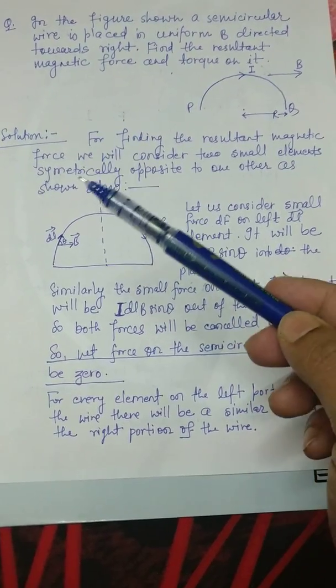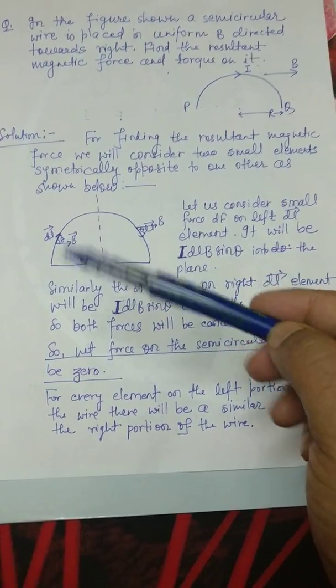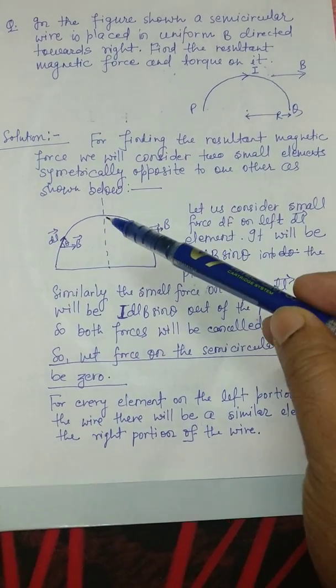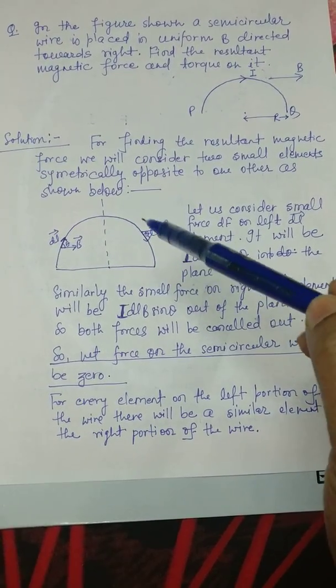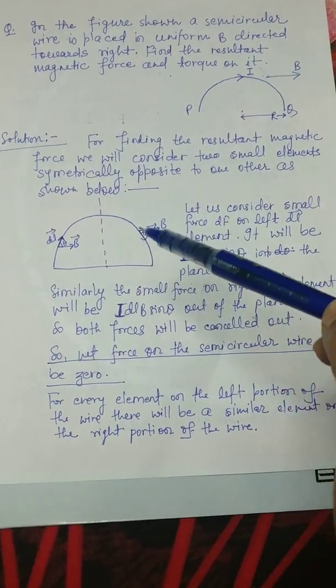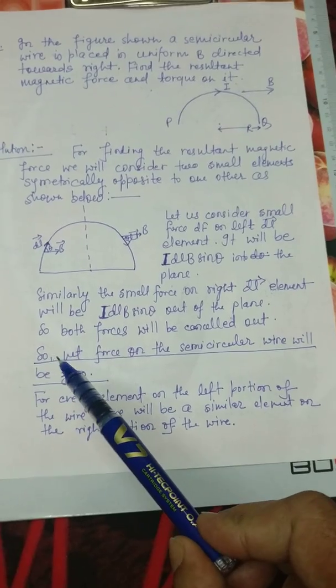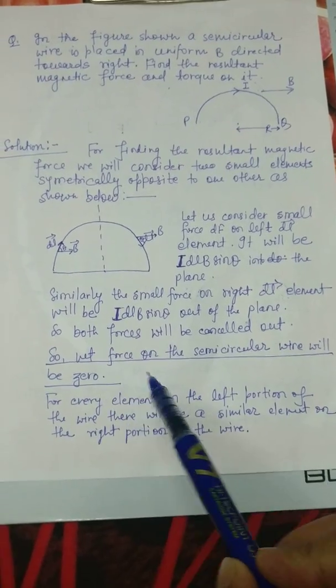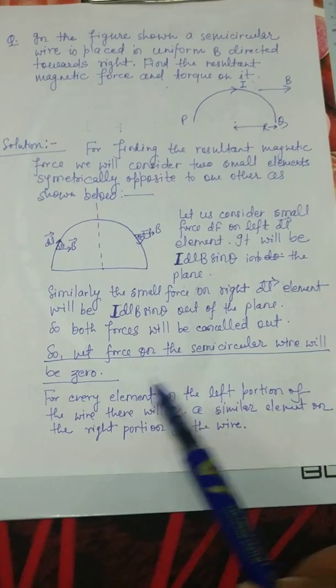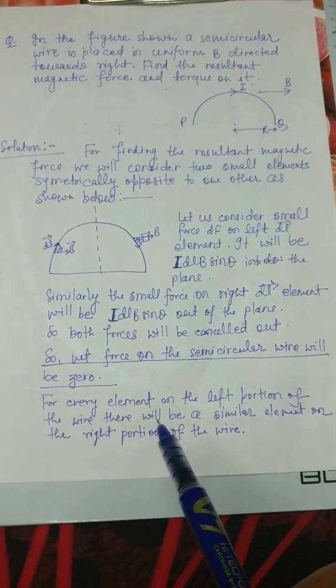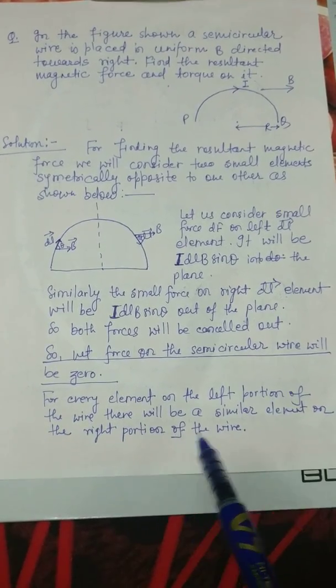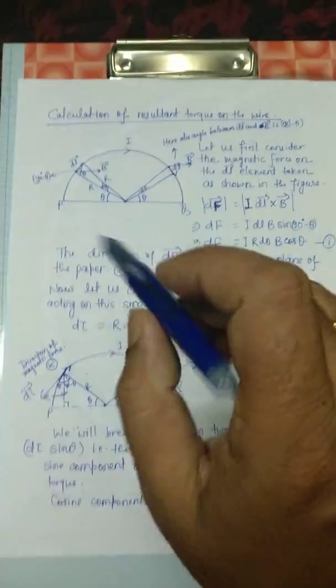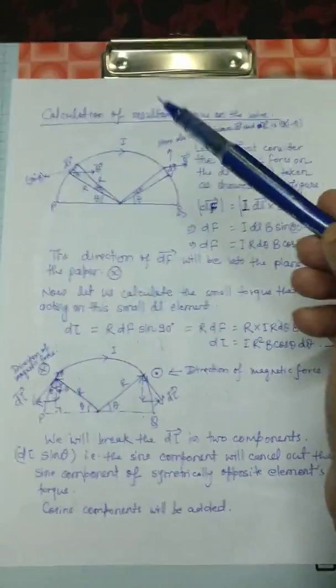All DL elements on one side experience forces that are cancelled by the corresponding forces on the opposite DL elements. Therefore, the net force on the semicircular wire will be zero, because for every element on the left portion of the wire there is a similar element on the right portion of the wire.